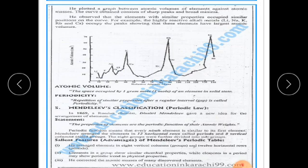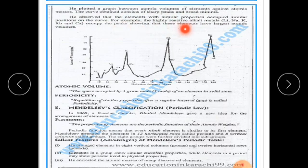He plotted a graph between atomic volume of elements against atomic masses. The curve obtained consists of sharp peaks and broad minima. He observed that elements with similar properties occupied similar positions on the curve. For example, the highly reactive alkali metals —